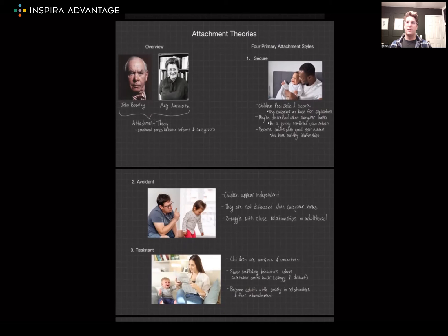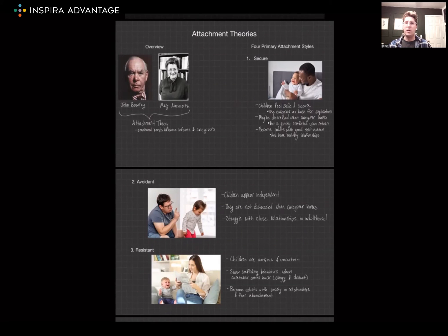For the MCAT, understanding these attachment styles is essential. They offer insights into how early childhood experiences shape an individual's approach to relationships, emotions, and behaviors, which is a crucial aspect of the psych and social sections. Attachment theories provide a crucial lens through which you can view human development. Understanding these won't just help your MCAT score — it's going to be a very important skill when you are a physician, especially to look out for kids and to better understand your future patients. Thank you so much for watching, and I will see you next time.